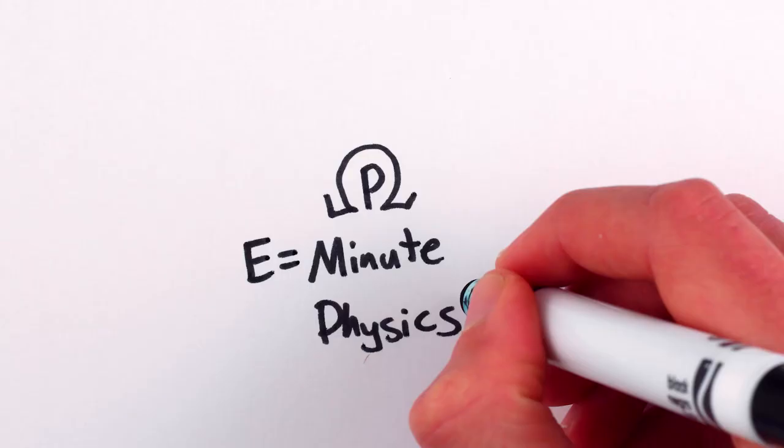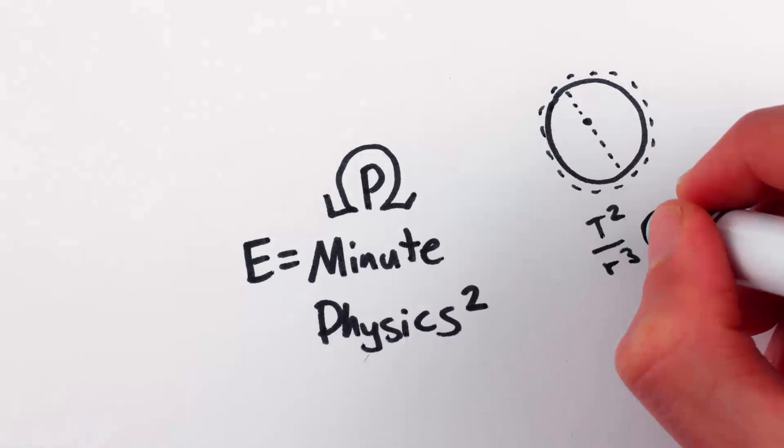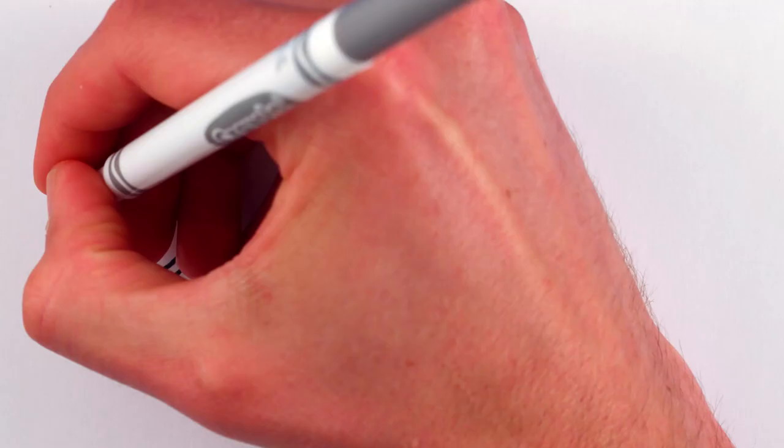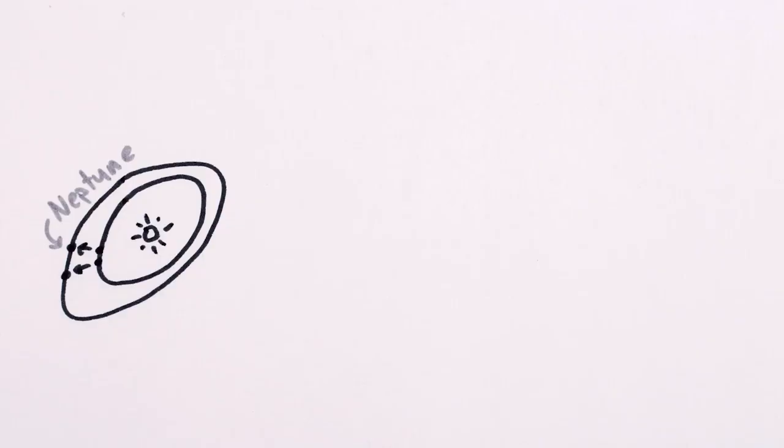Mathematics is a powerful tool in physics, describing everything from the shapes of planetary orbits to the properties of atoms. Math was used to predict the existence of the planet Neptune, radio waves, and the Higgs boson.